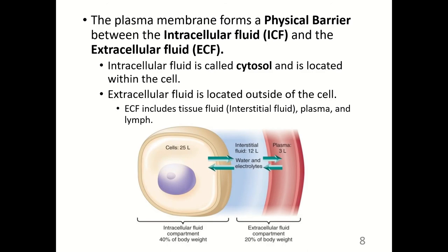The plasma membrane forms a physical barrier between the intracellular fluid and the extracellular fluid. Intracellular fluid is called cytosol and is located within the cell. Extracellular fluid is located outside of the cell and includes tissue fluid, also known as interstitial fluid, plasma, and lymph. The intracellular fluid, abbreviated ICF, takes up about 40% of the body's weight — nearly half of the body's weight is the water found within our cells.